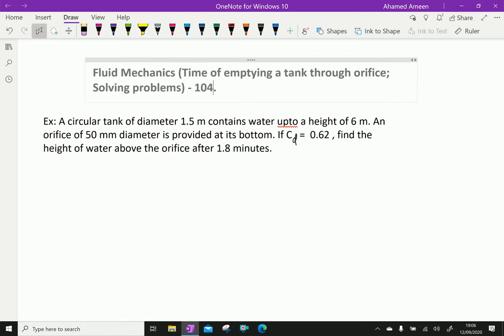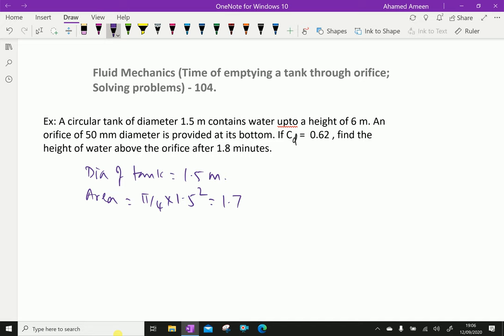Here, diameter of tank is 1.5 meter. Area equals pi by 4 times 1.5 square, which is 1.76625 meter square.